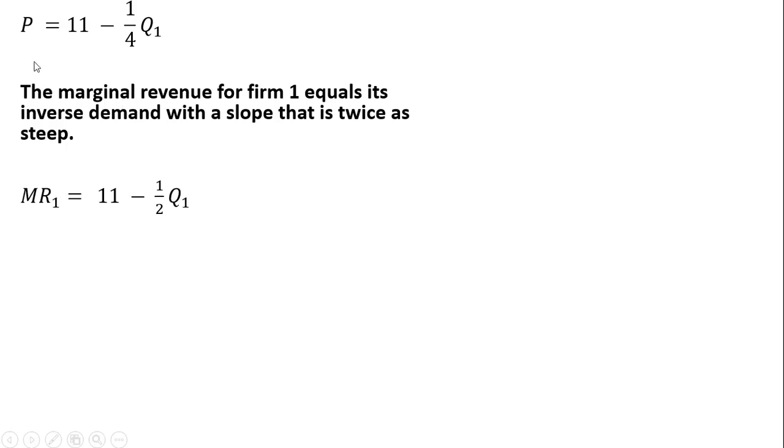The marginal revenue is just a price equation with the same vertical intercept but a slope that is twice as steep. So 2 times 1/4 is where this 1/2 comes from.